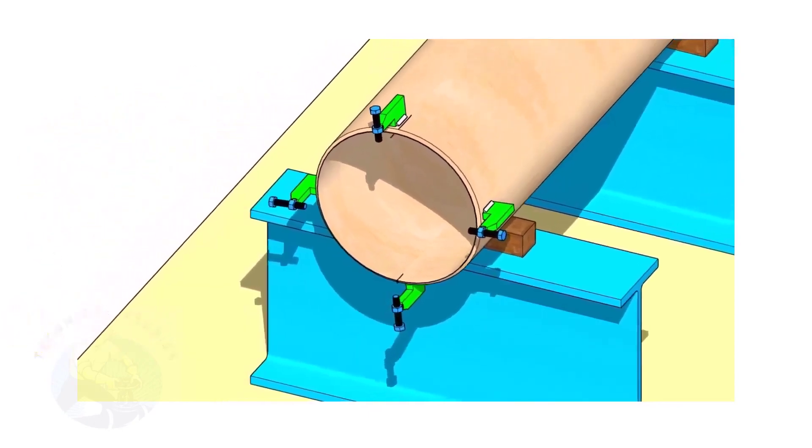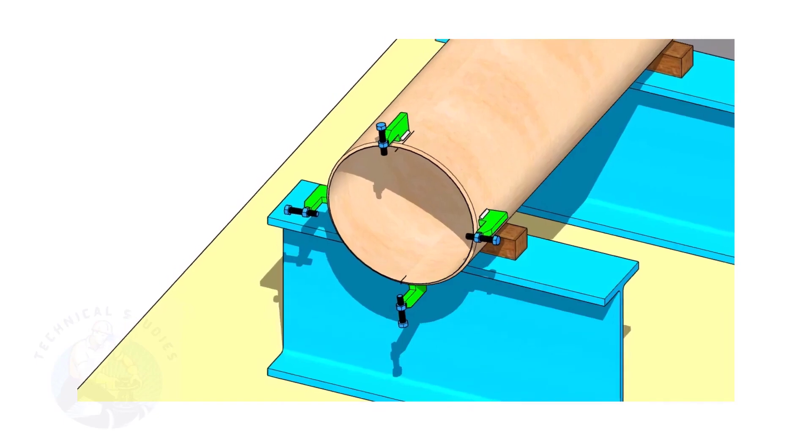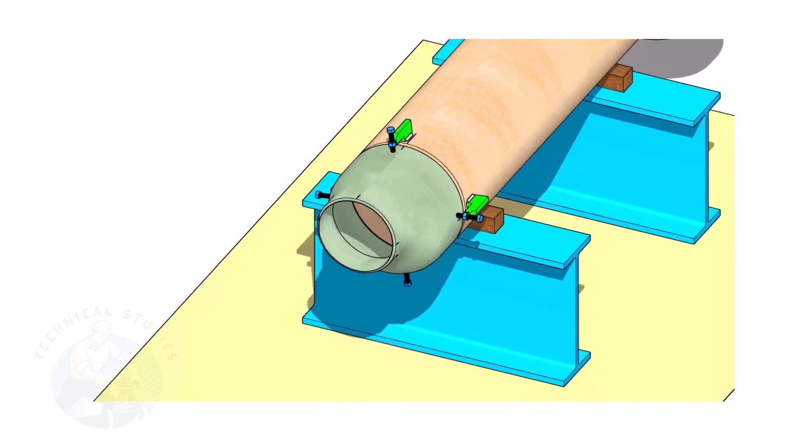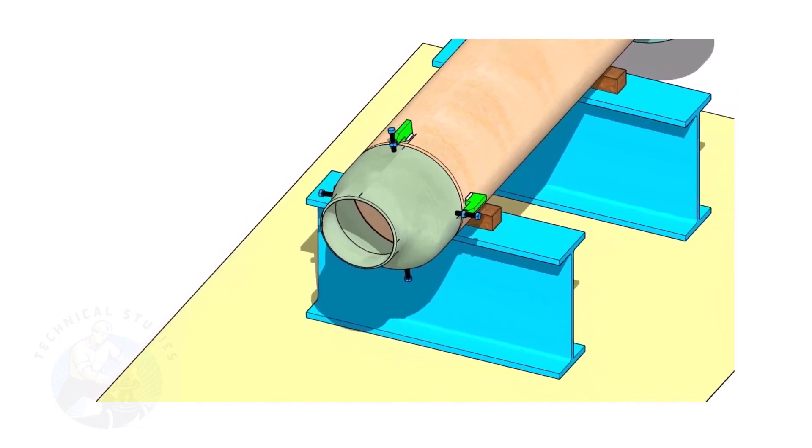If you don't have a pipe aligning clamp, tack weld four jack bolts 90 degrees apart as shown. Put the reducer in the clamps. Slightly tighten the bolts.